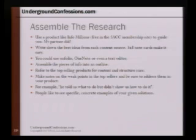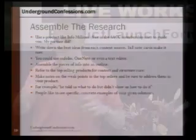Assemble some of the pieces of information into an outline and refer to the top-selling products for content and structure cues. If you don't know how to put all the pieces together when you've got all your 3x5 cards, look at a good book in the marketplace. Look at how it was structured — do you start with getting a merchant account or with setting up the eBay store? Look at the structure, see what makes sense, and use it as clues for how you can assemble the product.